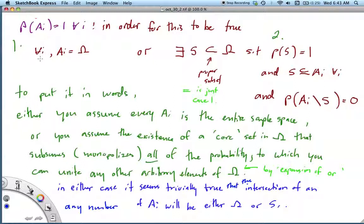There would have to exist a set S that's a subset of Ω, such that P(S) = 1, and S is a subset of Ai for all Ai, and the probability of the complement of S in Ai would have to be 0.